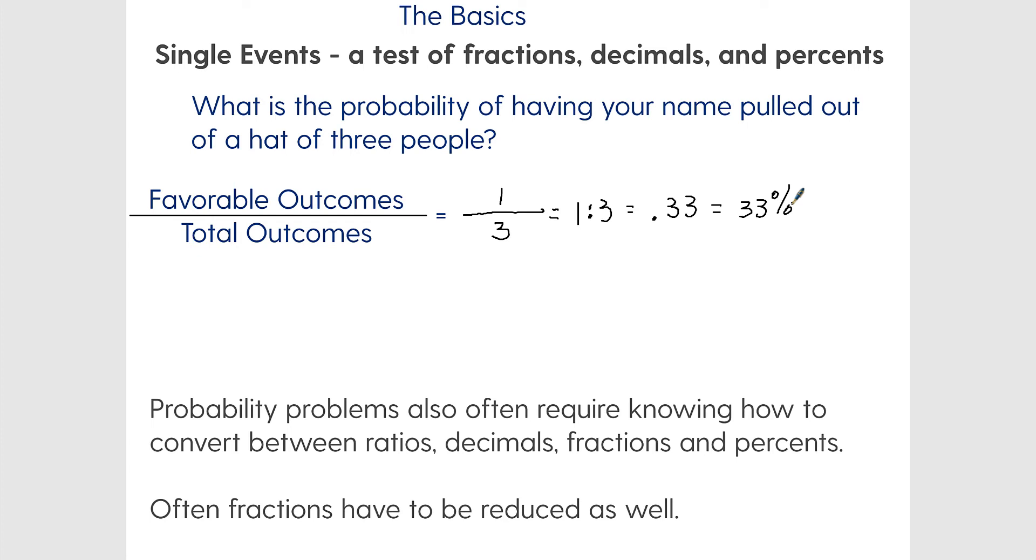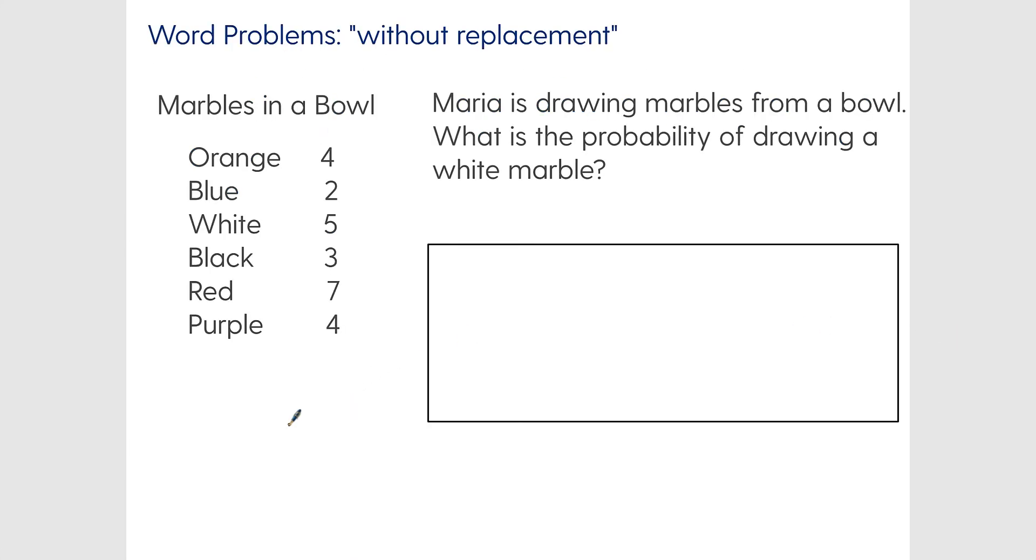The other thing is often fractions have to be reduced as well. Let's say you do a problem and you end up getting three out of twenty-four as your answer, but that isn't one of the answer choices because this can be reduced. Three fits into twenty-four exactly eight times, and three fits into three one time, so one-eighth is the more reduced fraction that you would see, which is going to be 12.5%, a one to eight ratio, things like that. You need to be able to reduce and convert between like forms.